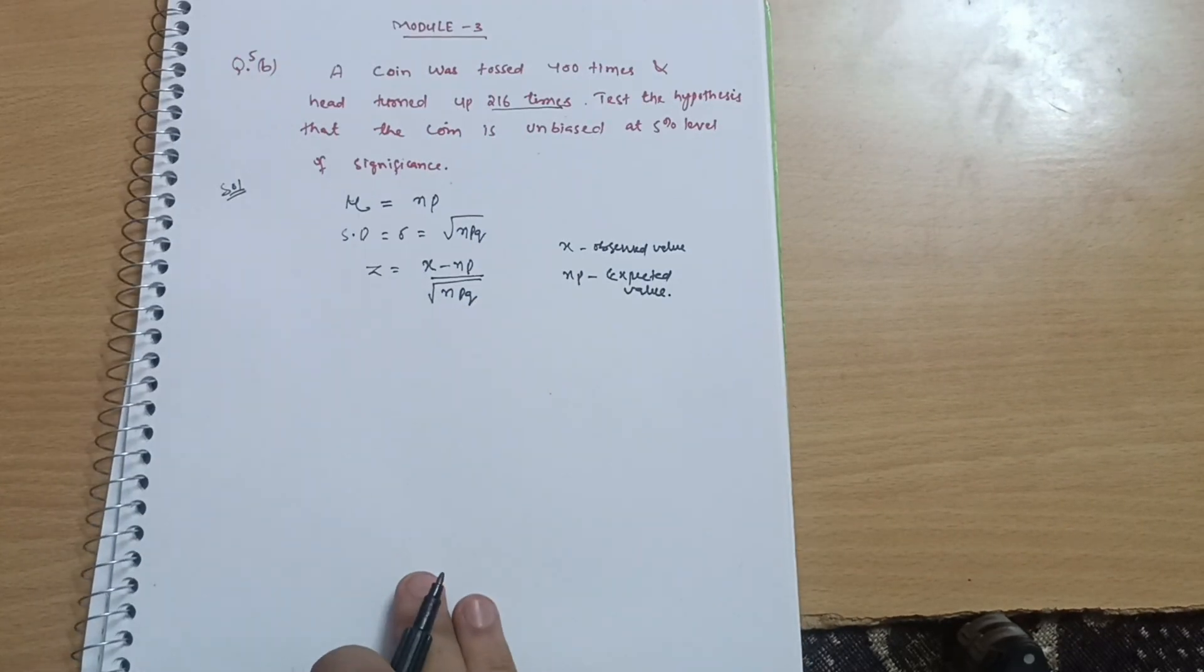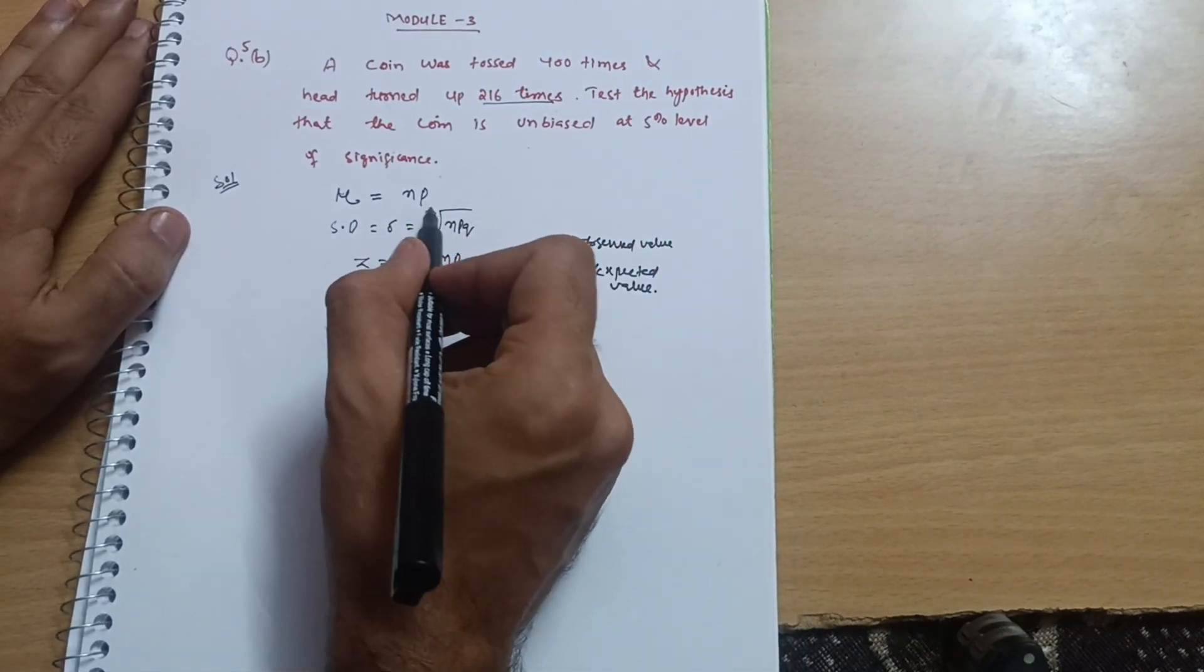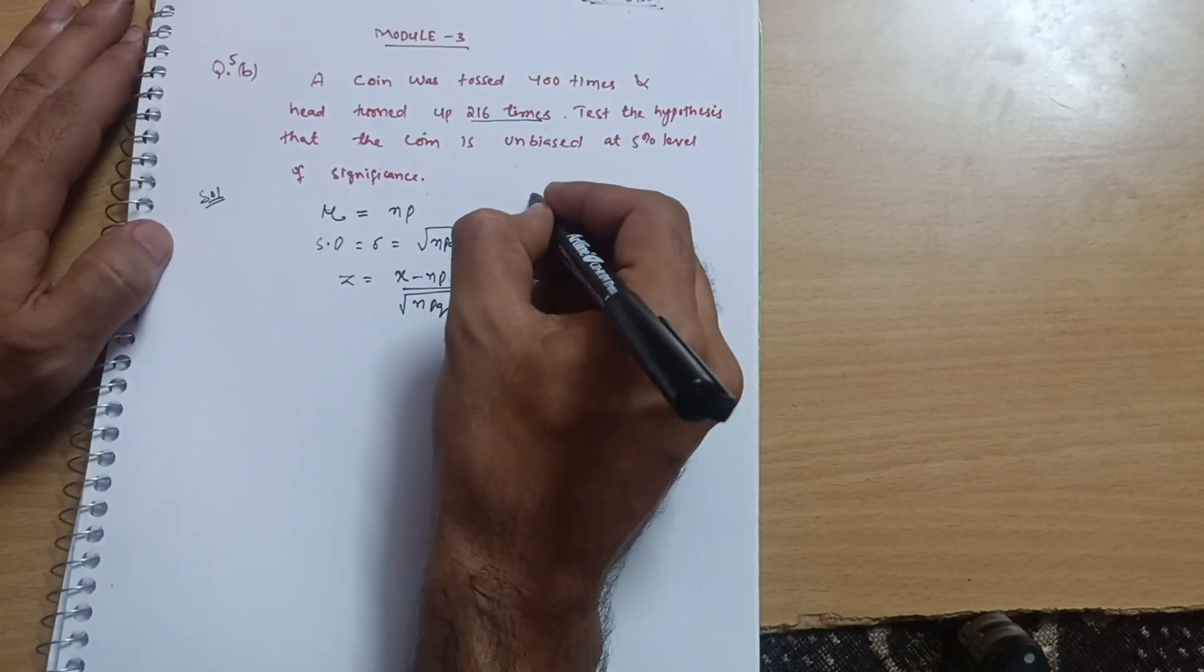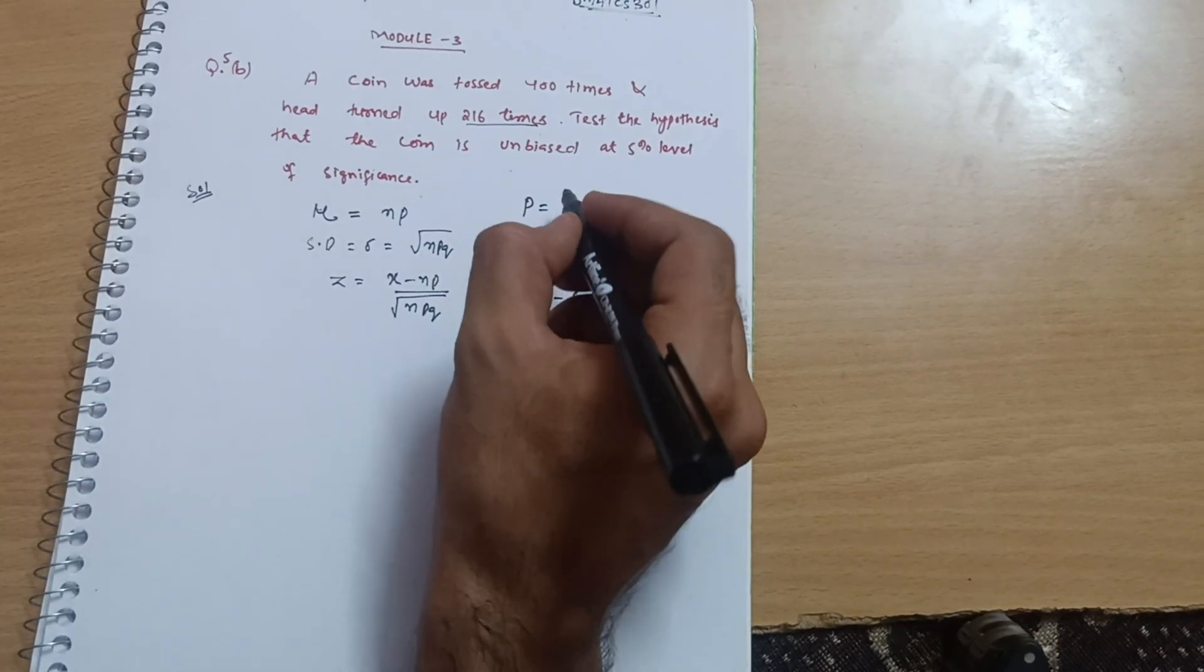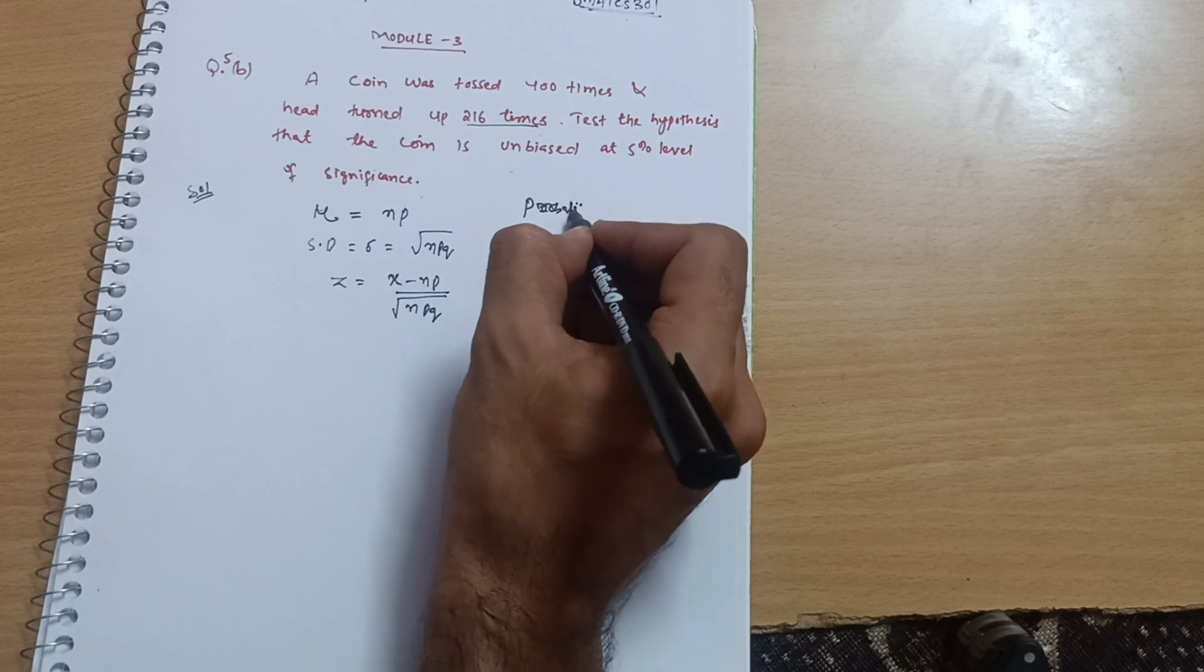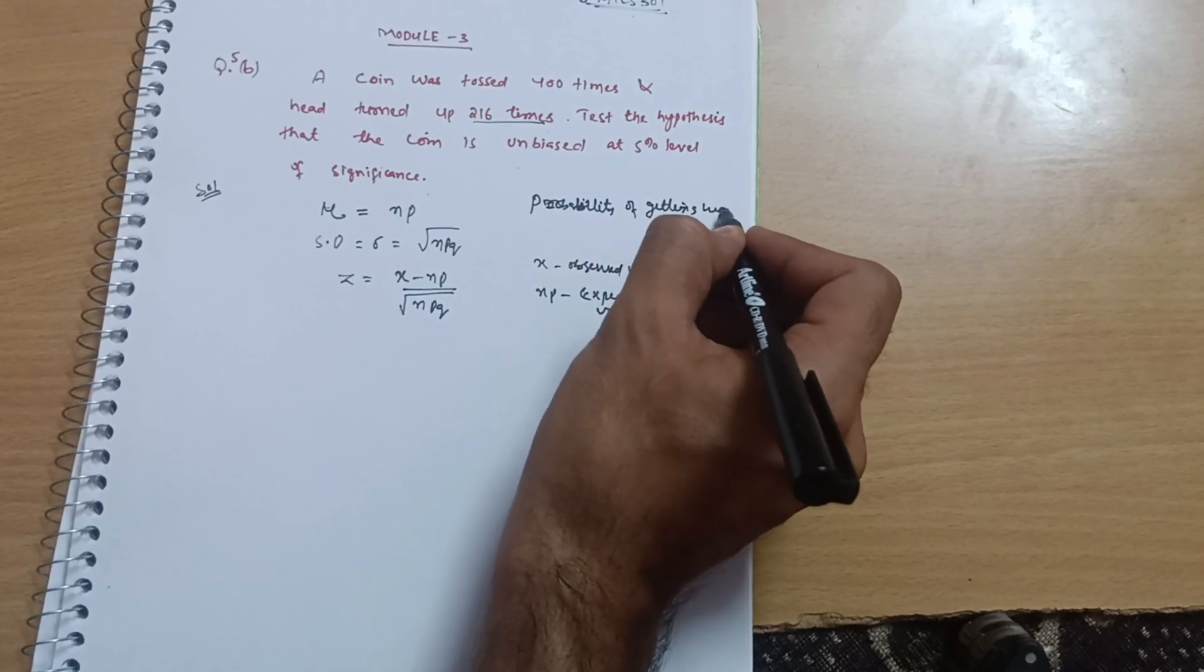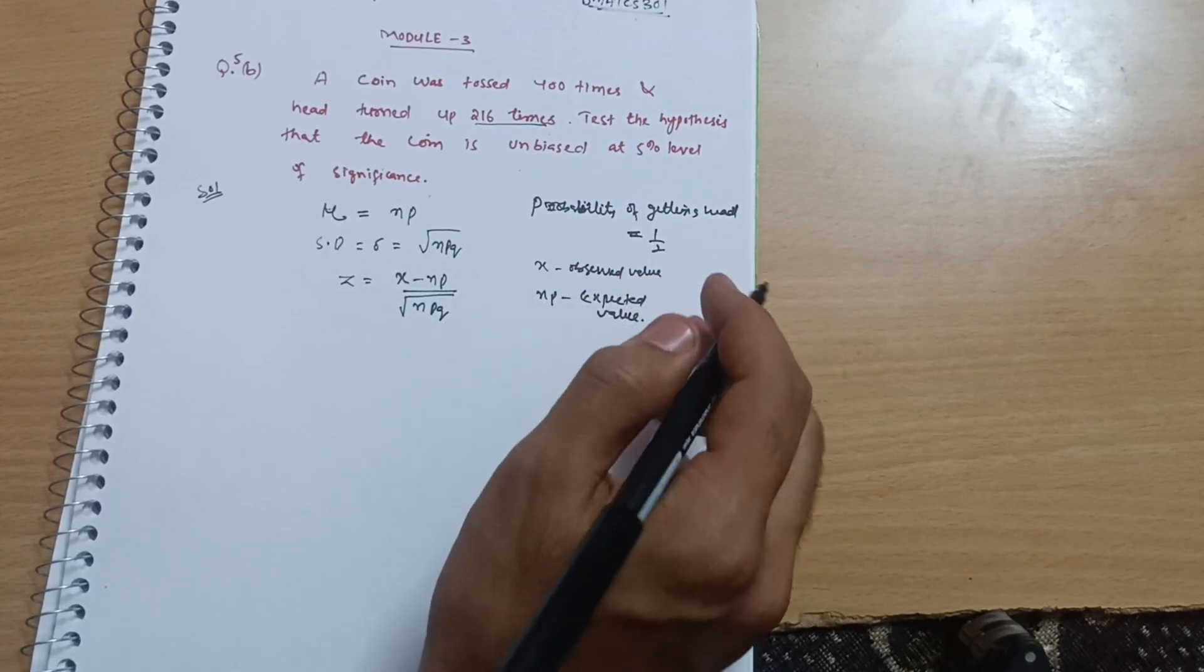NP is the expected value. Let us check the expected value, that is NP. For these particular calculations we need to complete the probability first. When a coin is tossed, the probability of getting head is equal to 1 upon 2, 1 by 2. Half chances are there for head.